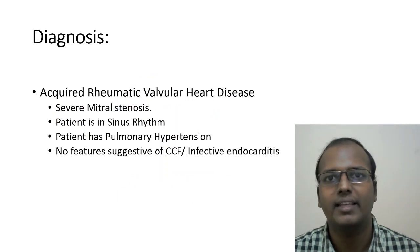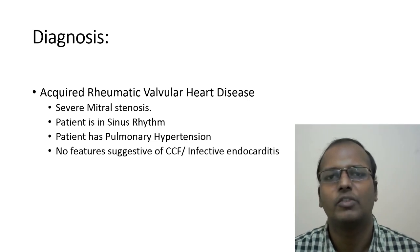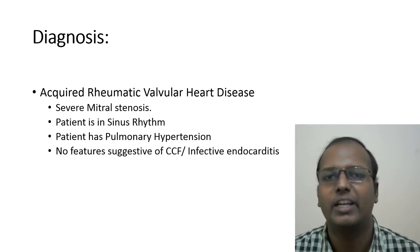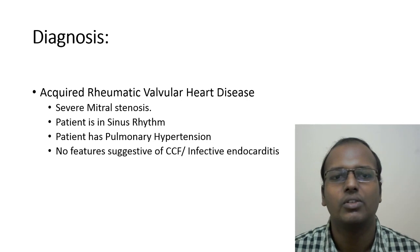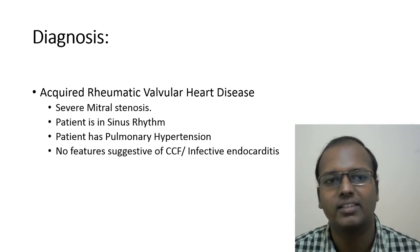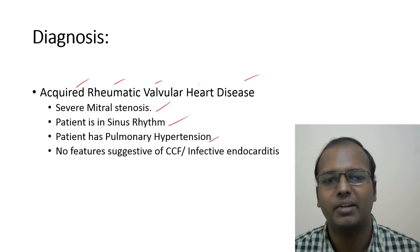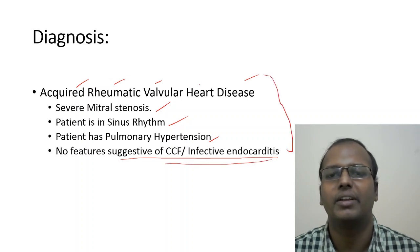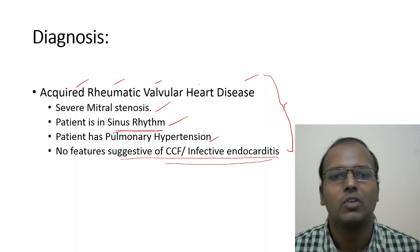For a long case, check other systems as well. Respiratory system: bilateral vesicular breath sounds, no added sounds. Abdomen: soft, no organomegaly — hepatomegaly can occur in right heart failure. CNS: no focal neurological deficit — thrombus in the heart can embolize and cause stroke; paradoxical emboli from DVT through ASD can also reach systemic circulation. For a short case, go straight to the diagnosis, for example: acquired rheumatic valvular heart disease, severe mitral stenosis, sinus rhythm, pulmonary hypertension, no features of congestive cardiac failure or infective endocarditis. Mention atrial fibrillation if present.